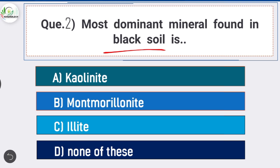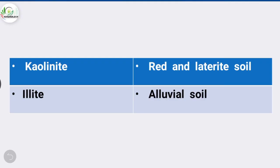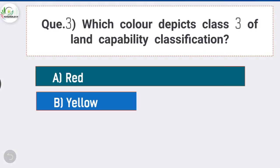Question number two: the most dominant mineral found in black soil is montmorillonite. Kaolinite is abundant in red and laterite soil, and illite is abundant in alluvial soil.